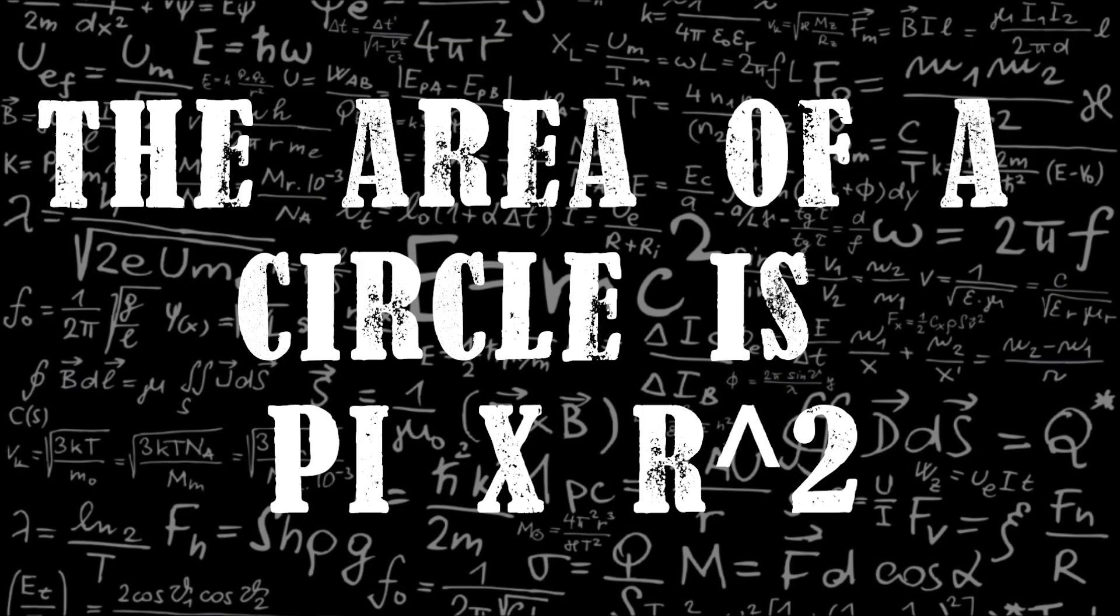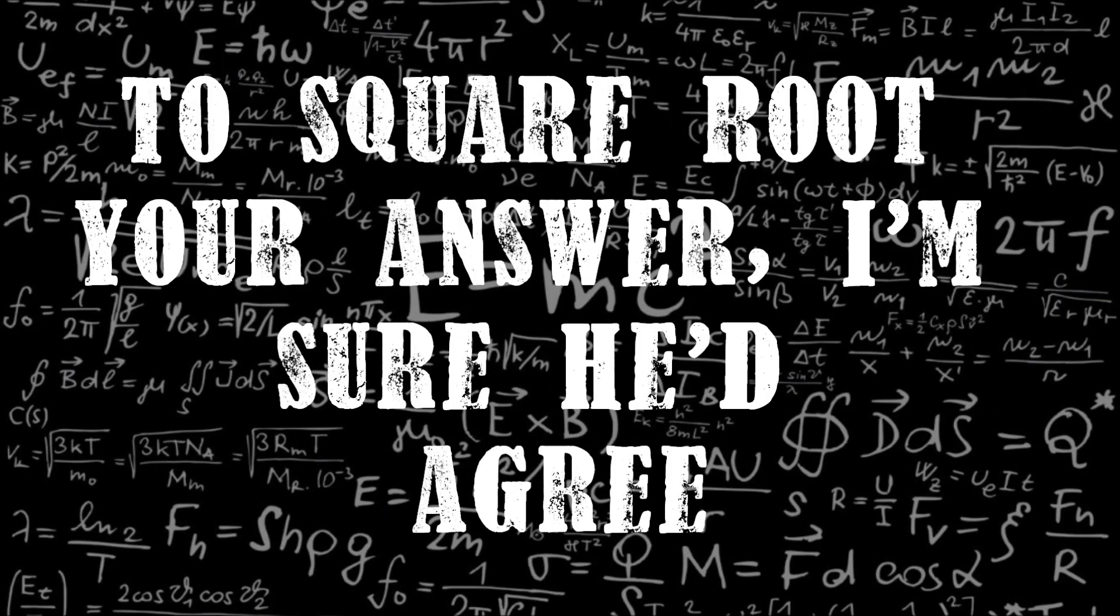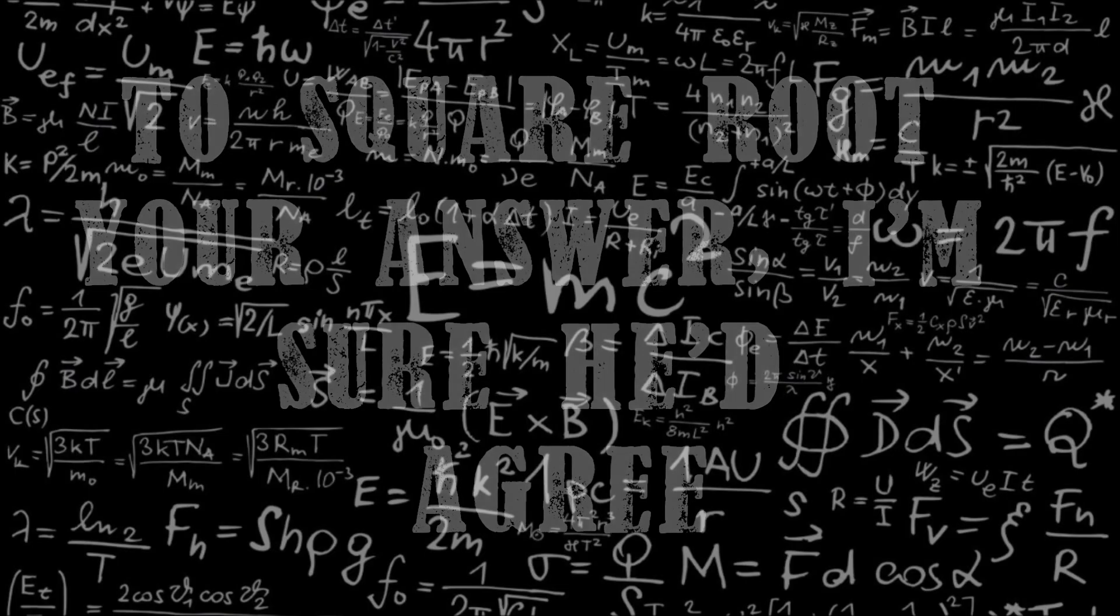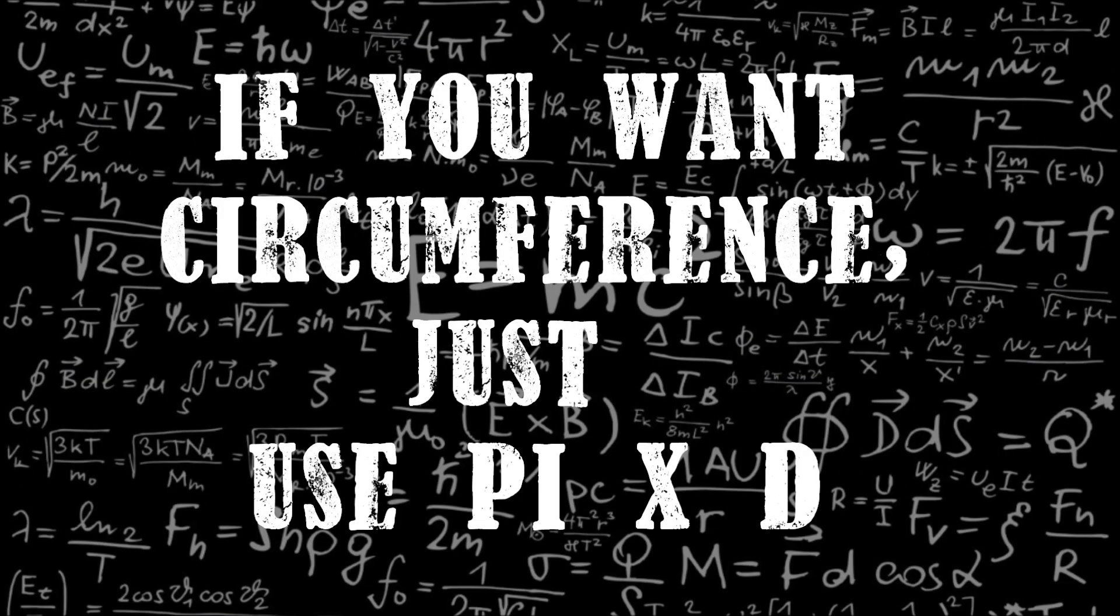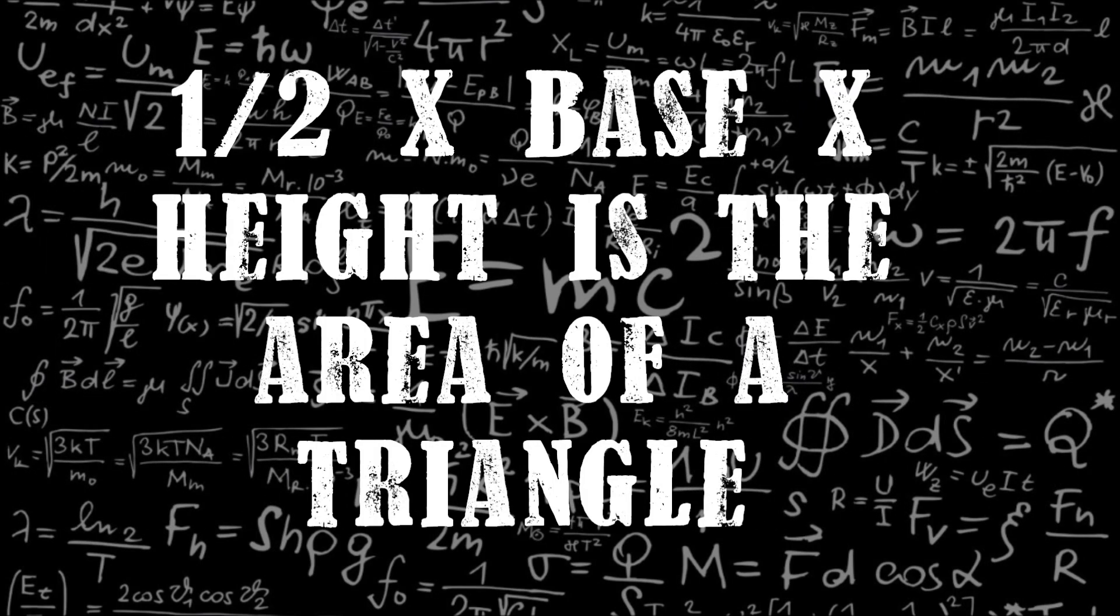The area of the circle is πr² and when using Pythagoras, always be aware to square root your answer, I'm sure he'd agree. And if you want to work it out, just use Pythagoras. Half times base times height is the area of a triangle.